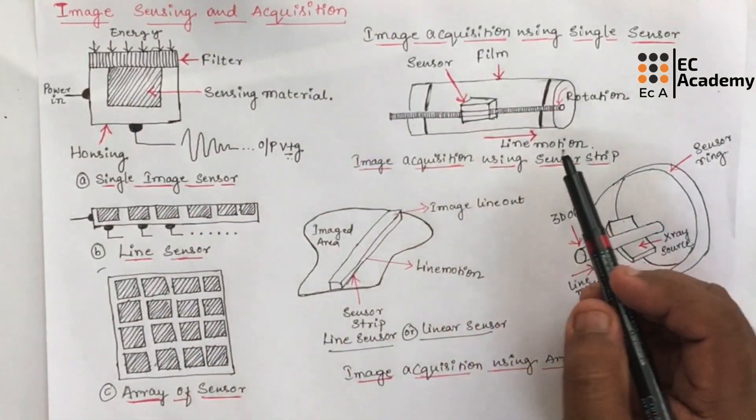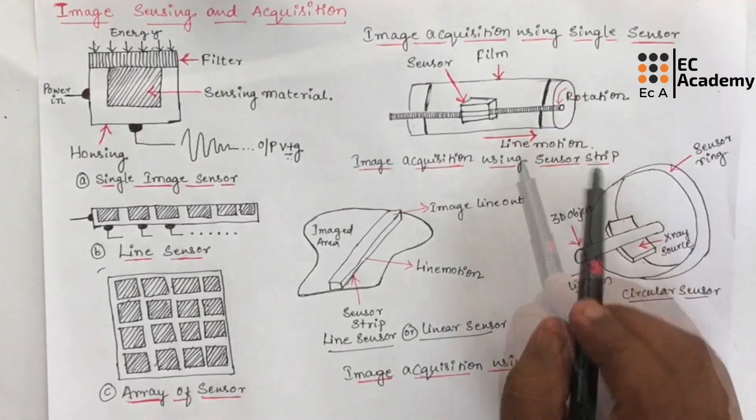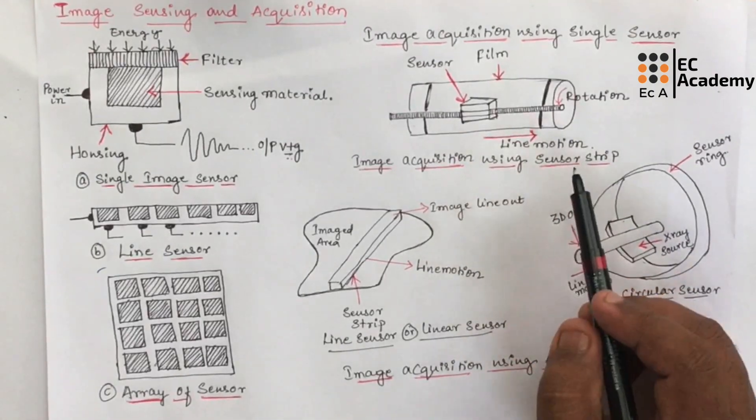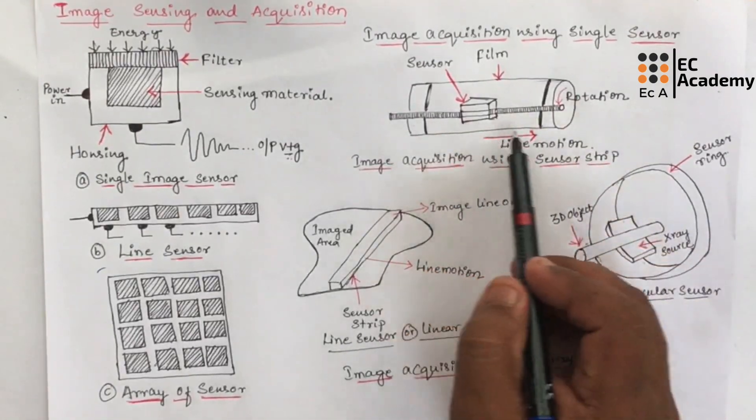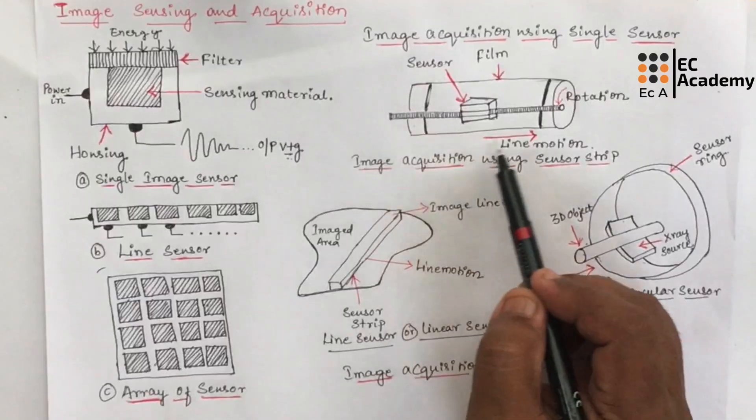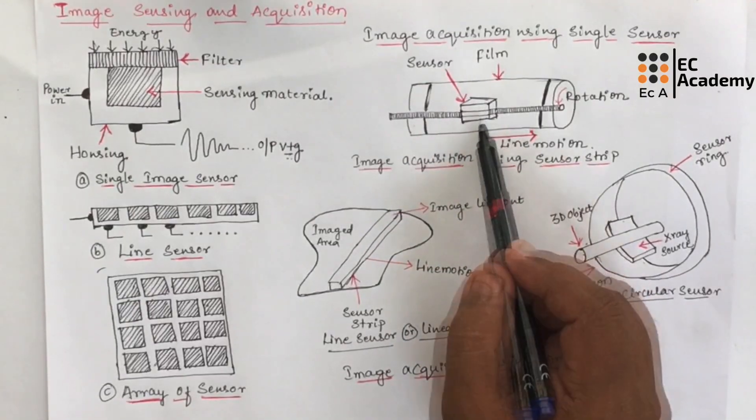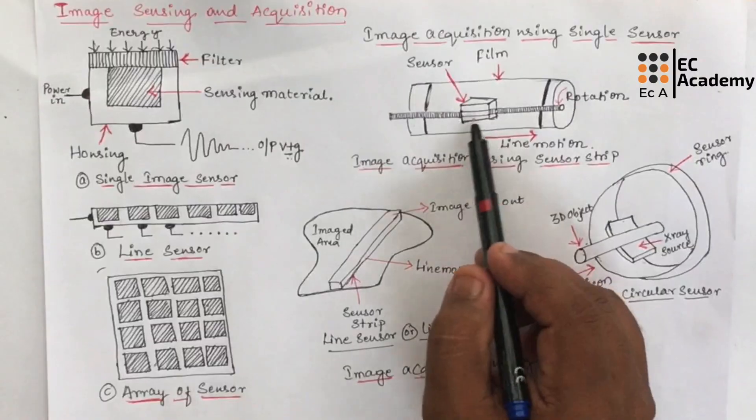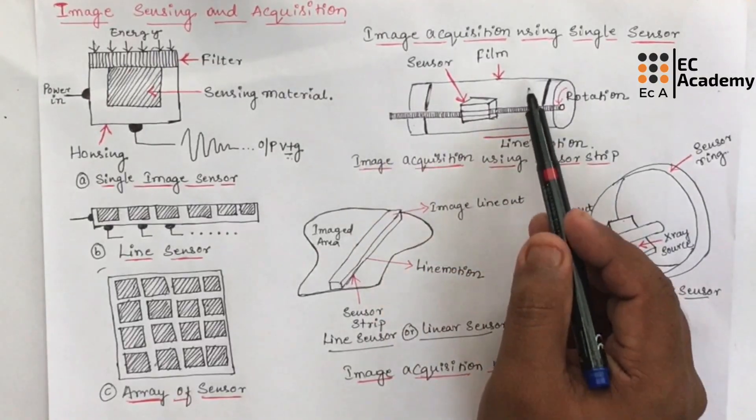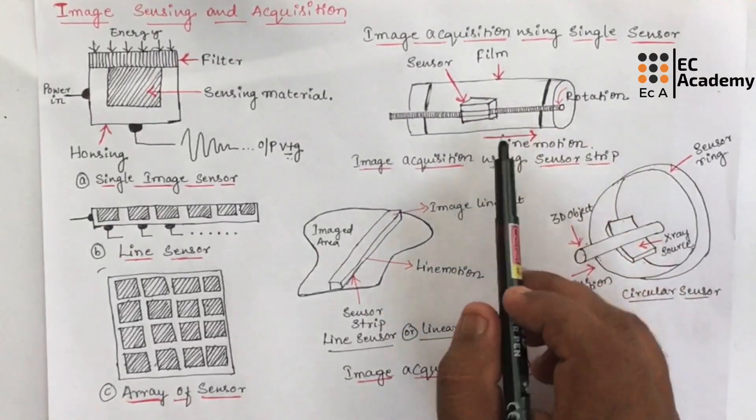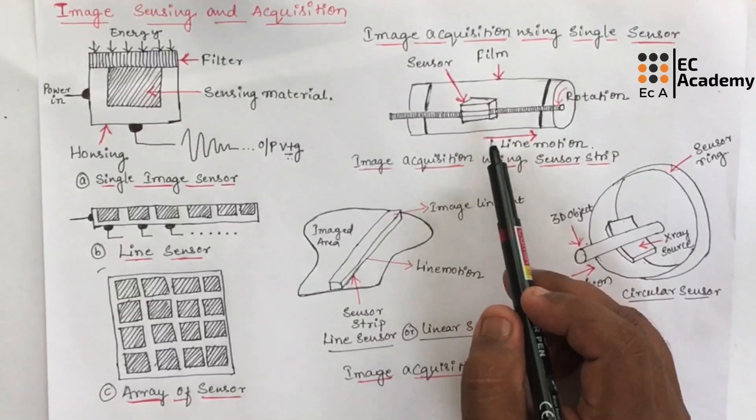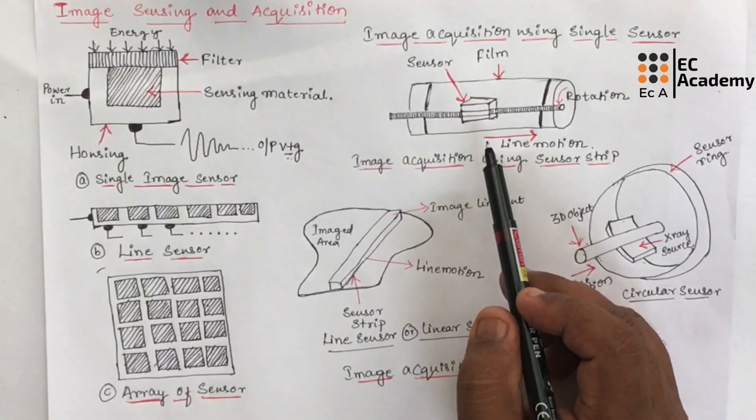To generate 2D image using single sensor, there has to be relative displacement in X and Y direction. If you consider this as an example, where the image is acquired using a single sensor, the displacement of the sensor should be in X direction as well as Y direction.